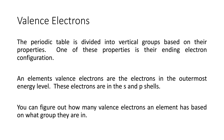These electrons are in the S and P shells. Let's take a look at sodium. Sodium, when we do noble gas shorthand, is Ne and 3S1. So that means it has one valence electron. We can use these blocks to tell how many valence electrons they have.